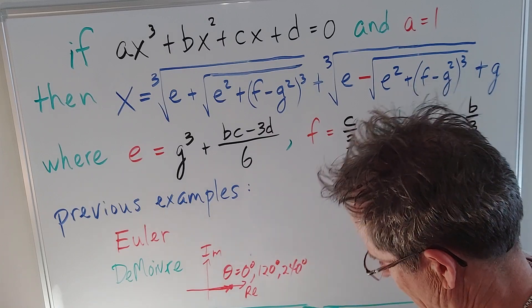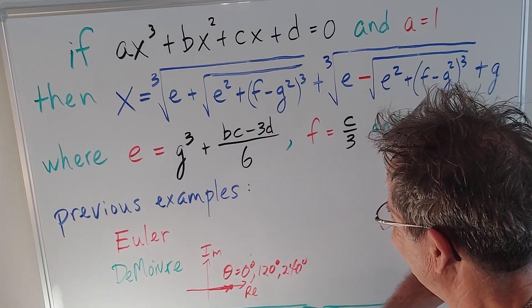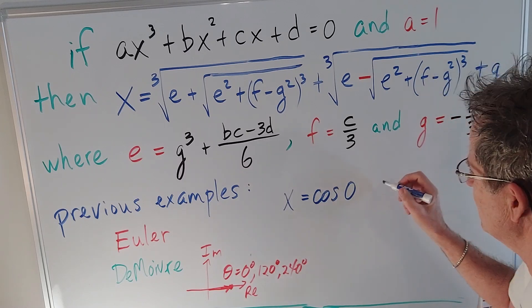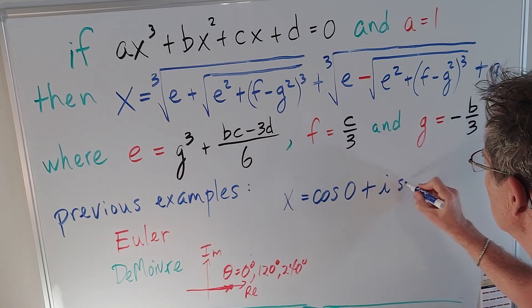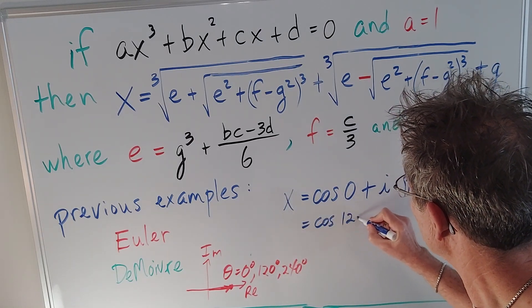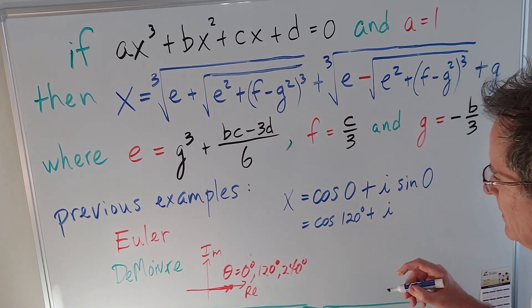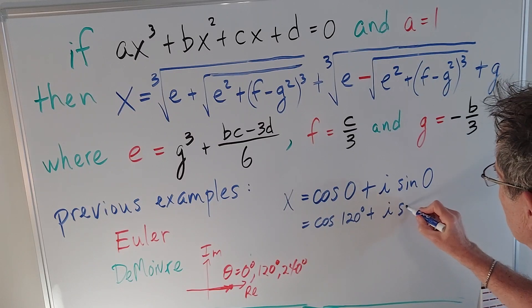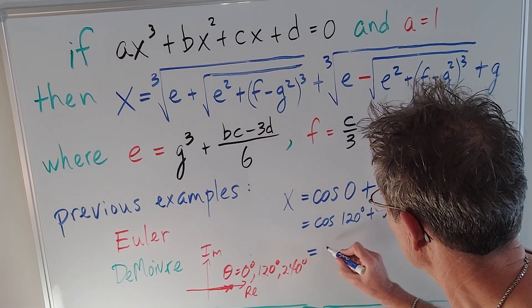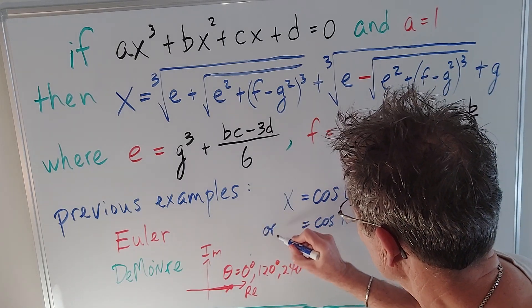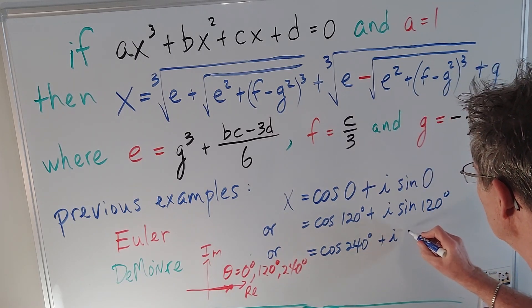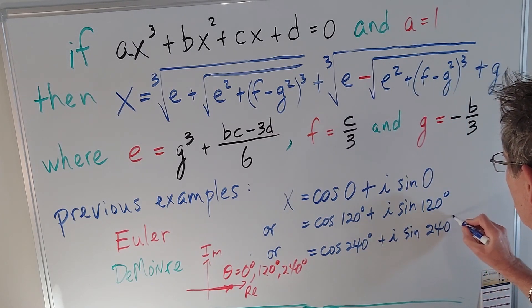I'm going to get x = cos(0) whether it's degrees or radians plus i·sin(0), I'm going to get cos(120°) or 2π/3 if you prefer plus i times the sine of 120°, and I'm also going to get the cos of 240° plus i·sin(240°).